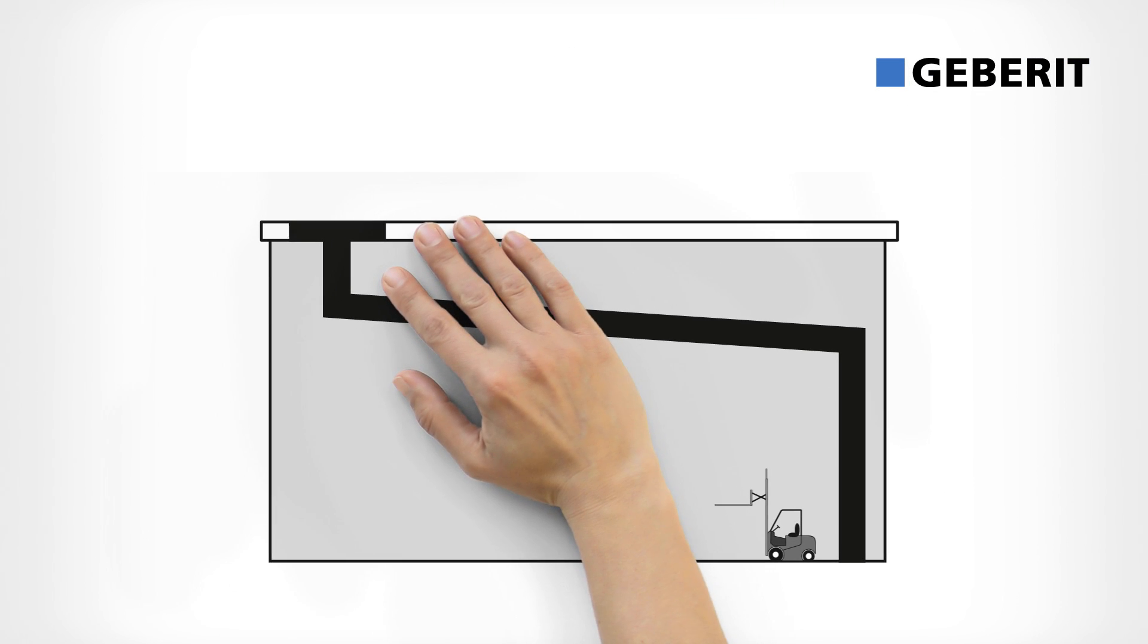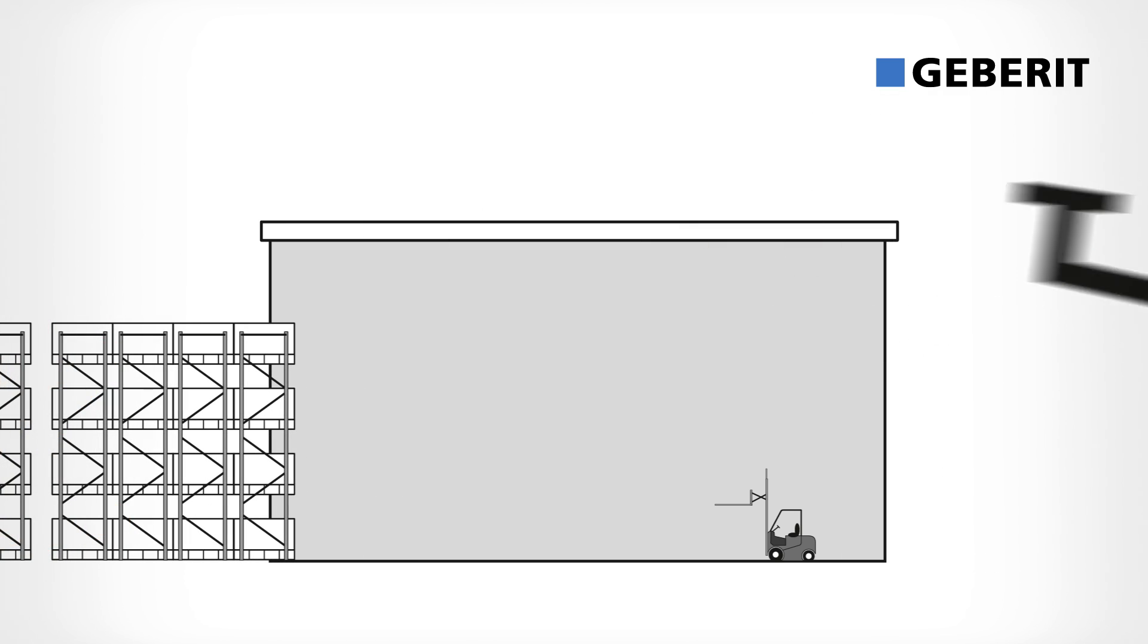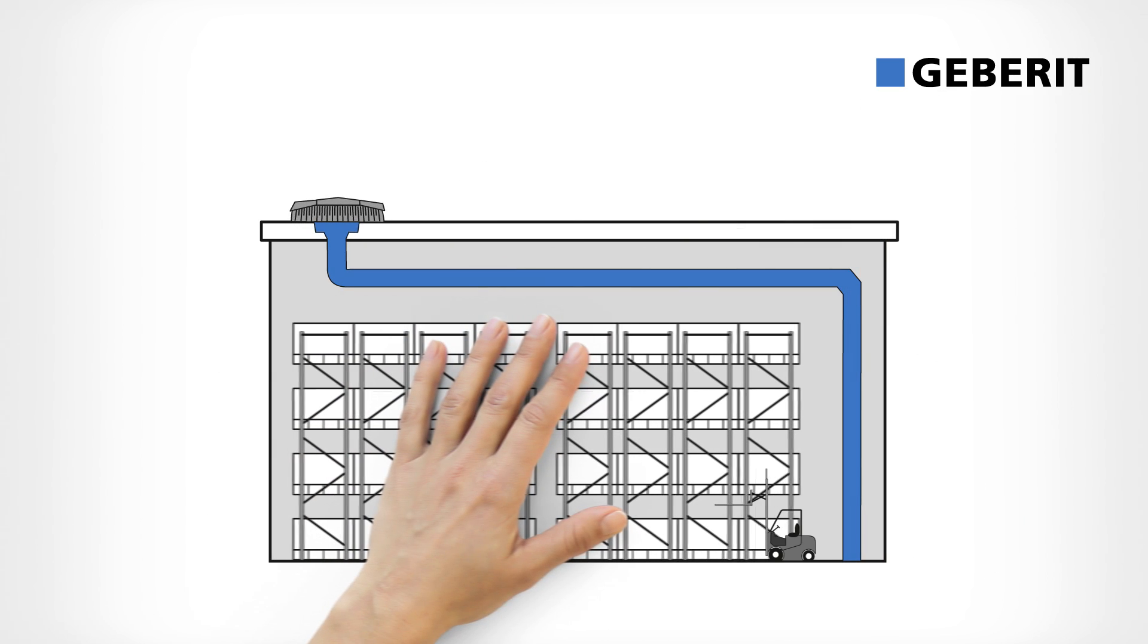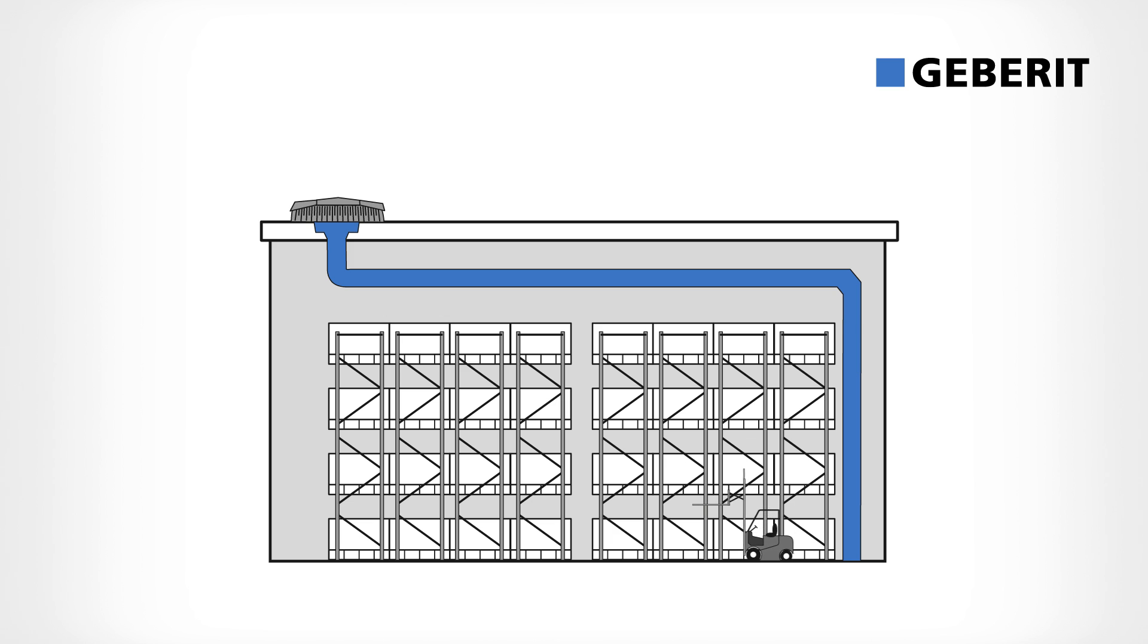In conventional roof drainage systems, the pipes require a slope. This takes up valuable space. That isn't the case with Geberit Pluvia. With this system, no slopes are created during installation. This ensures more efficient use of space.